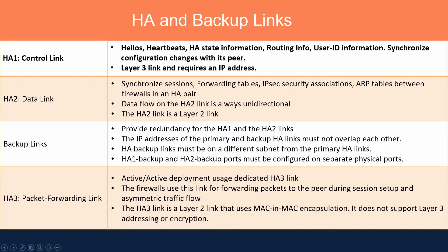The HA2 link is a data link used to synchronize sessions, forwarding tables, IP security associations, and ARP tables between firewalls in the HA pair. Data flow on the HA2 link is always unidirectional — from active to passive. If the primary is active, data flows from primary to secondary; if the secondary becomes active, data flows from secondary to primary. The HA2 link is a layer 2 link, so you do not need to configure an IP address.